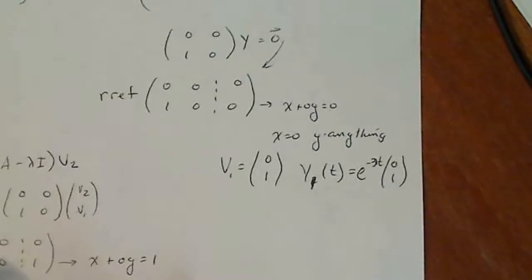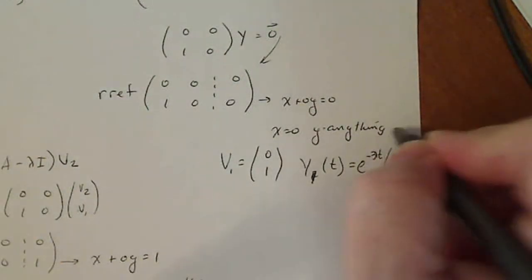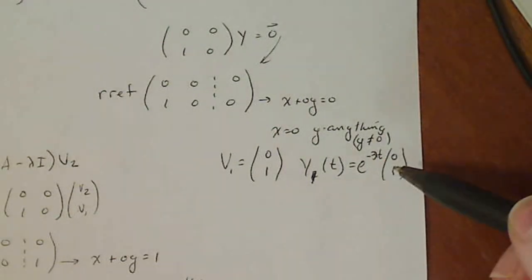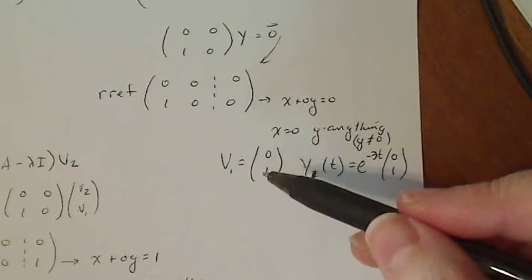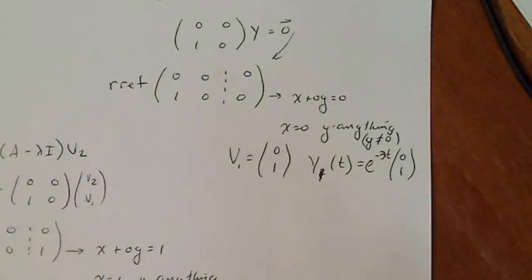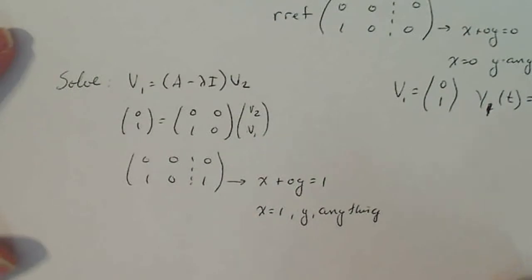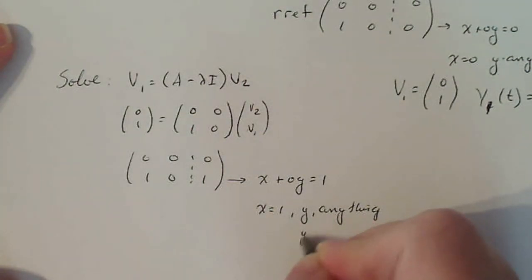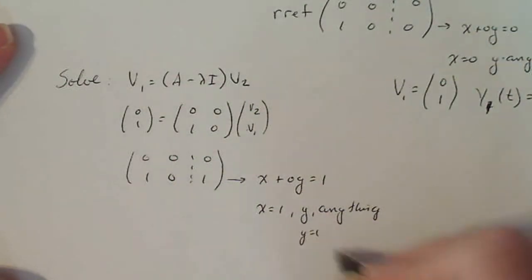Now up here, y technically can't be anything. y cannot be 0. And why is that? Because if y is 0, I have the 0 vector here. And no eigenvector can be the 0 vector. So I have to choose something that's non-0 for the y value there. But down here, since I have already a standard value for x and it's non-0, y could be 0 if you wanted it to be. I'm going to let y equal 1. So my v2 is going to equal (1,1).